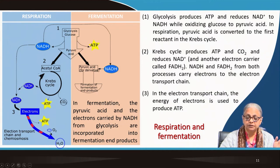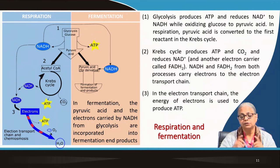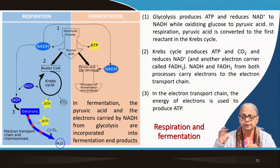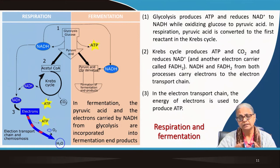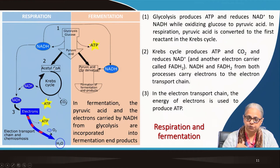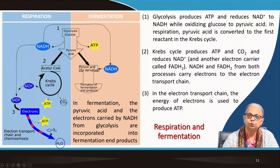The other choice is respiration. Pyruvic acid enters the Krebs cycle. Before it enters, this C3 molecule is converted to a C2 molecule called acetyl-CoA — coenzyme A attached to an acetyl group. This C2 acetyl-CoA comes into the Krebs cycle. So pyruvic acid (C3) is first converted to acetyl-CoA (C2), which then enters the citric acid cycle.